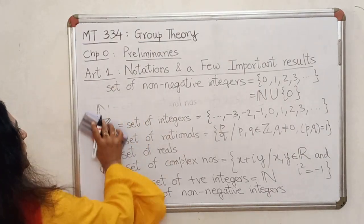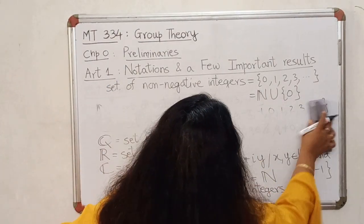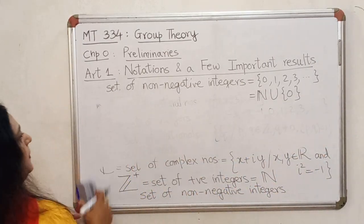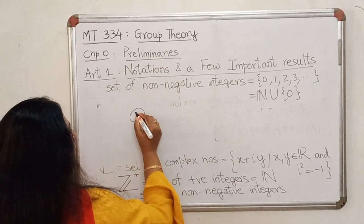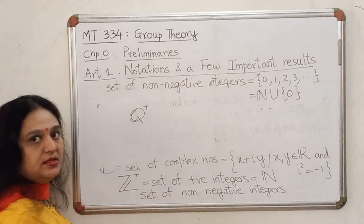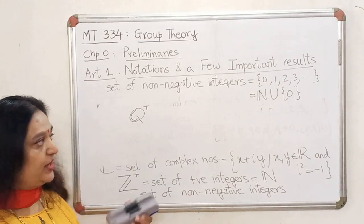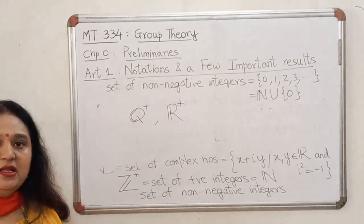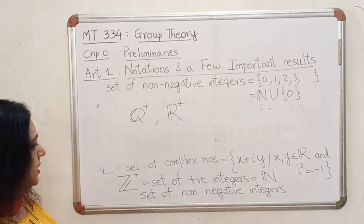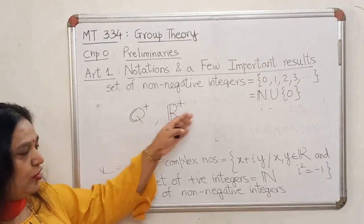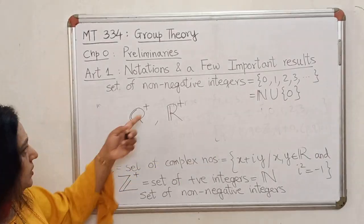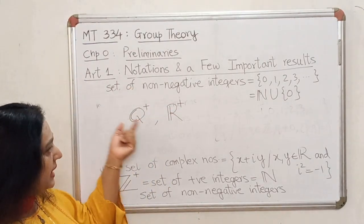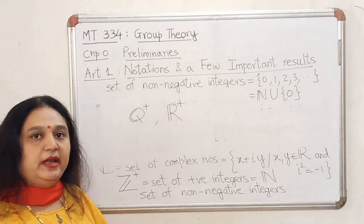Just like that, we can also define Q plus. This will denote the set of positive rationals. We can have R plus. This will be the set of positive real numbers. However, don't make the mistake of writing C plus. So this plus symbol when it is used as a superscript, it means that from that set, you simply take all the positive elements.